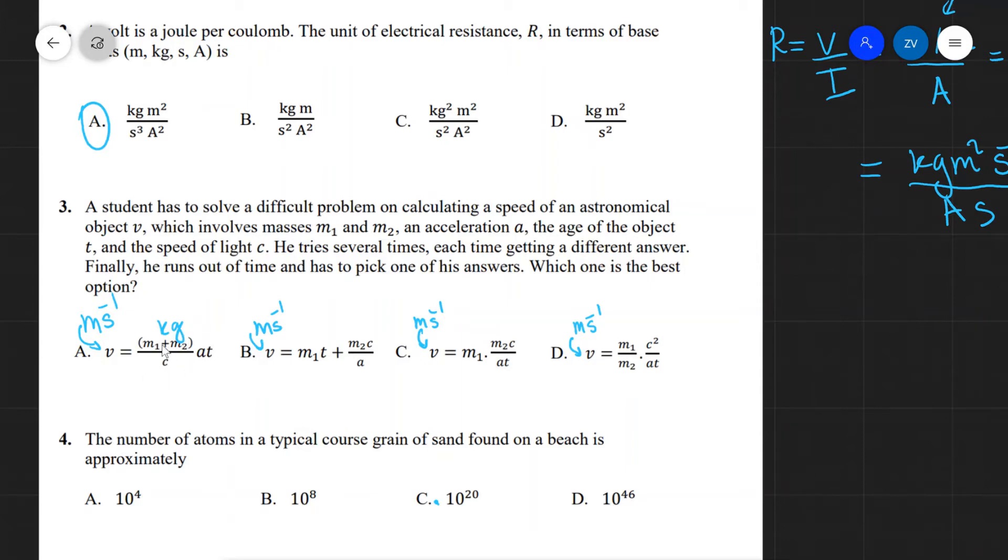So this will still leave kilograms multiplied by some other quantities. Very similar here. So we have kilograms here times time, and we have kilograms times something else. So it's not going to be b as well.